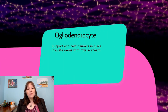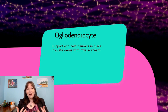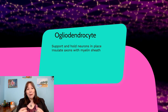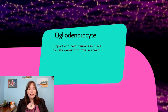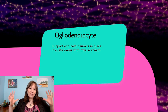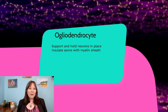Then we have the oligodendrocyte cells, and these tend to be a bit larger. These are responsible for the myelin sheath. They come out and little parts of them wrap around the axons of the neuron cells to provide myelin sheath. There are also other glial cells that provide myelin, such as Schwann cells. These support and hold the neurons in place, insulate the axons, and help make the structure of our nervous system.